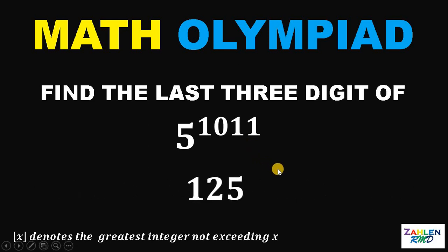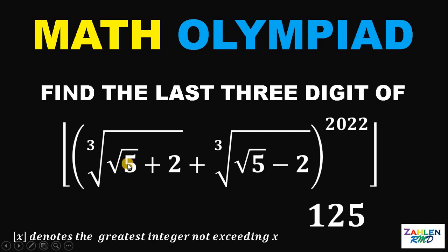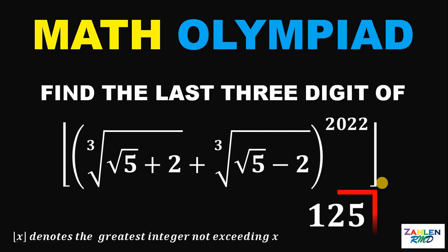Therefore, the answer to this question — find the last three digits of the floor value of (cube root of (√5 + 2) + cube root of (√5 − 2))^2022 — is simply 125. And as always, we are done.